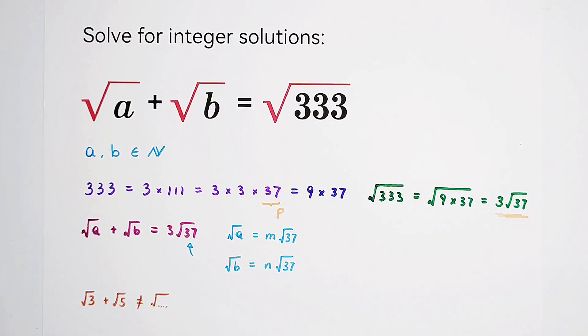Then, we have to find out m and n. We know that a and b are natural numbers. So m and n are, of course, natural numbers. That means they can be equal to 0.